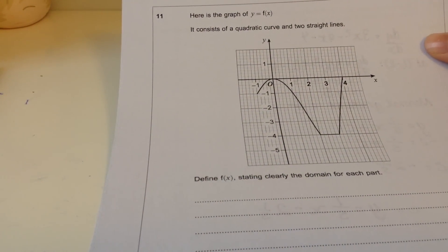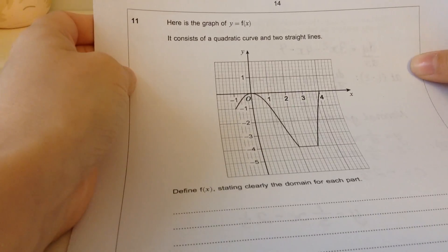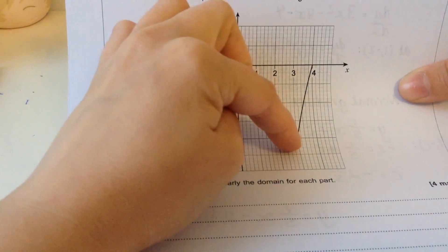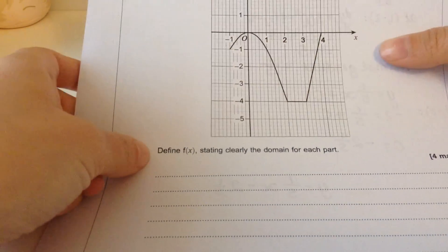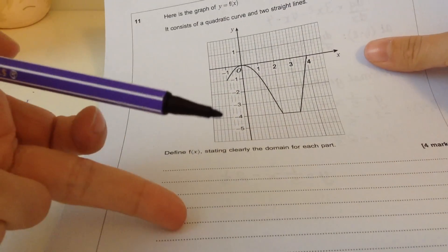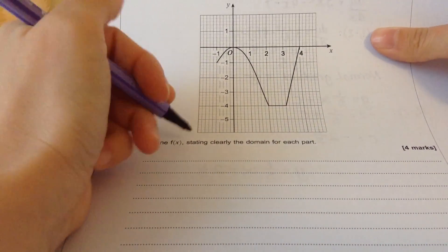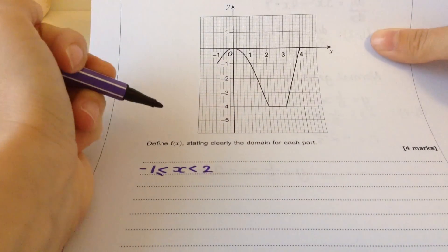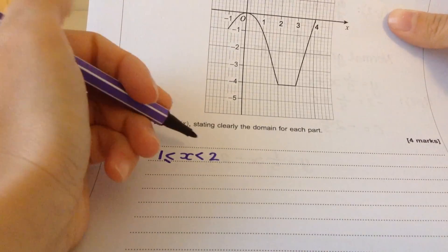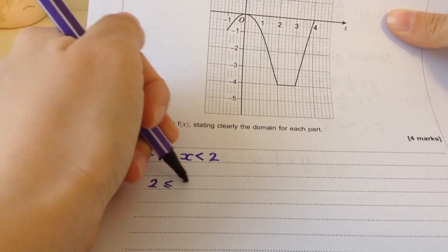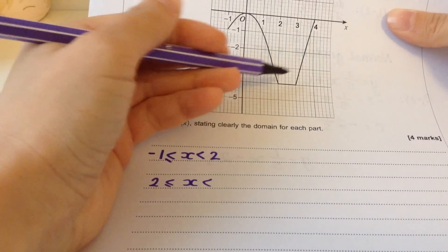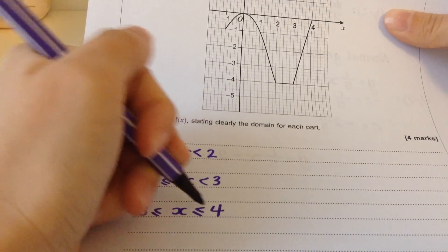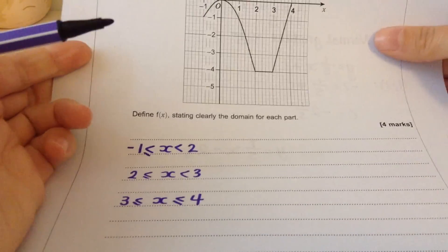Number eleven. Here is the graph of y equals f of x. It consists of a quadratic curve and two straight lines. I can see this bit's quadratic and then that bit's straight and that bit's straight. Define f of x stating clearly the domain for each part. This is one of those functions where it's got different sections. So we'll go for when x is between minus one and two, and I'm going to include minus one but exclude two. That's two to three, and then that's three to four, and I'm going to include four in that.